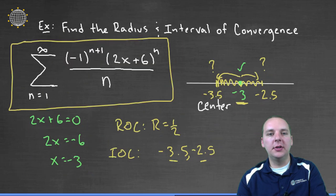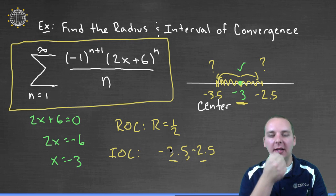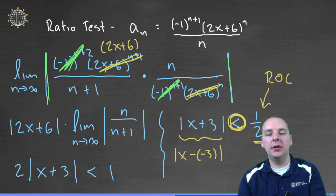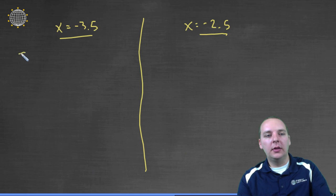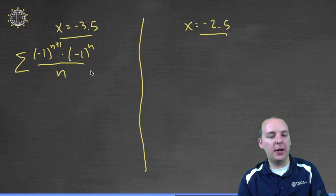So let's see what these turn into. So help me with the mental math here, if x is negative 3.5, then 2 times negative 3.5 is negative 7. Negative 7 and 6 make negative 1. And so this series would turn into the sum, we'd have negative 1 to the n plus 1, times negative 1 to the n, all over n, if I did that math right.